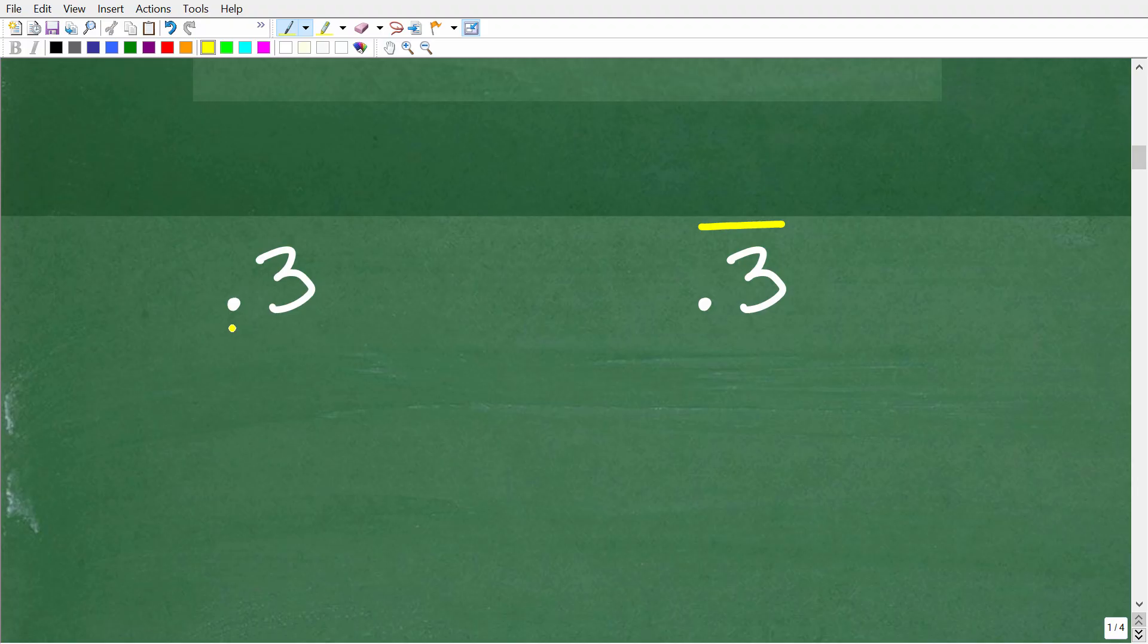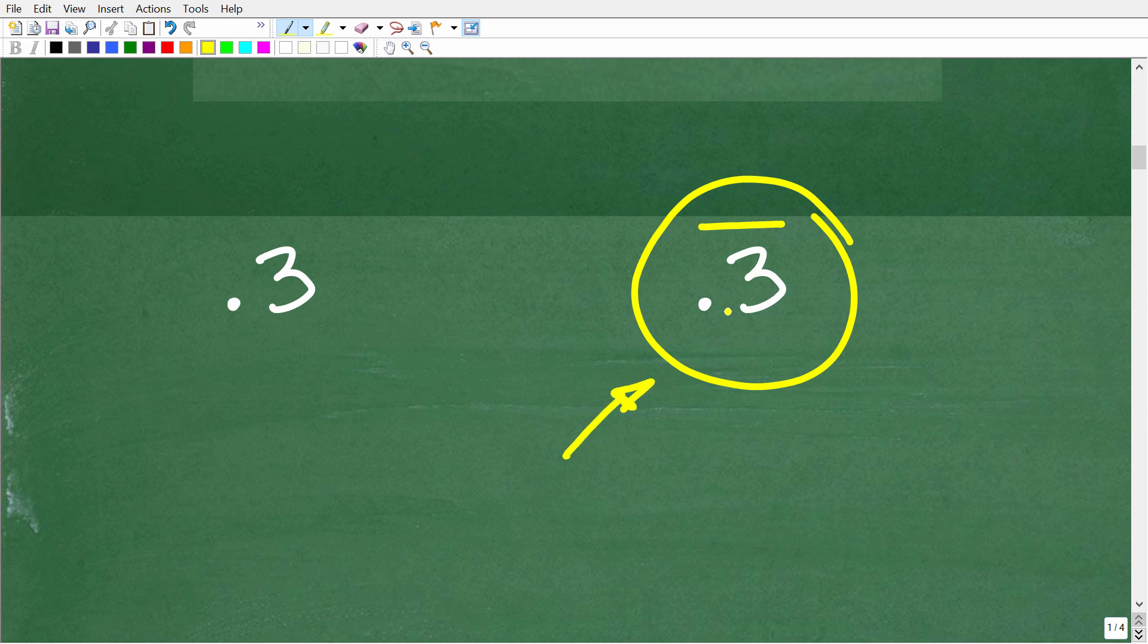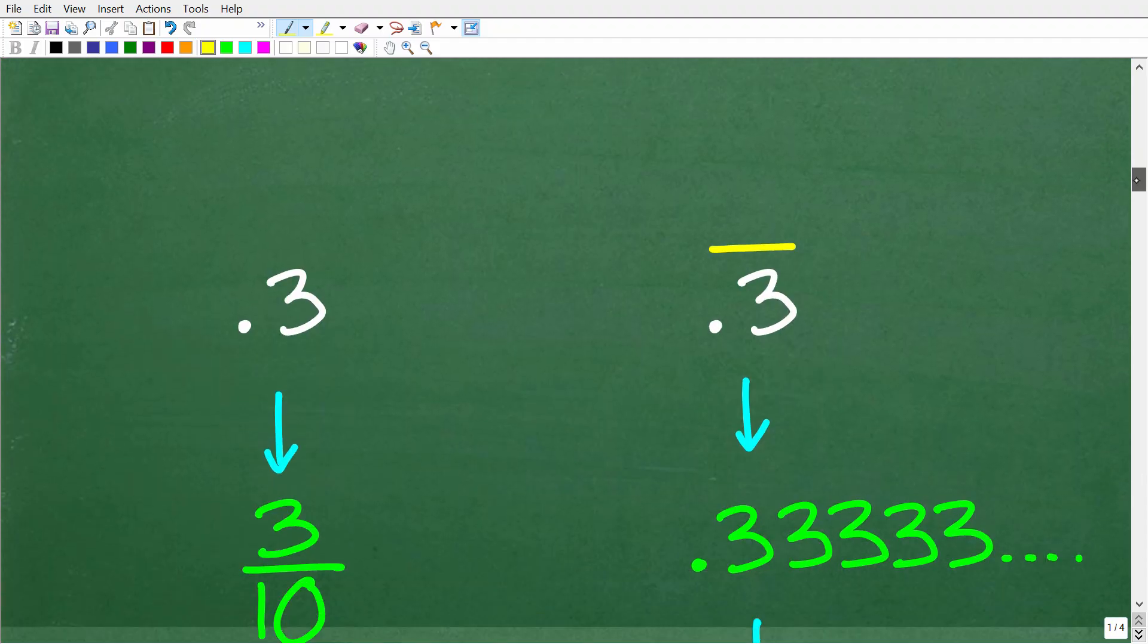Okay, so this is 0.3 and this is 0.3 with a bar over it. So what we say with this notation right here, that this is 0.3 repeating. So this is 0.3 all by itself. This 0.3 repeating means that this digit 3 is repeating infinitely. So what we have here is actually this.